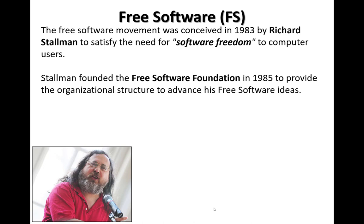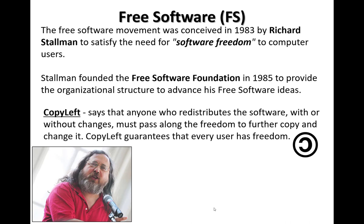I'm going to start by introducing Richard Stallman. In 1983, he conceived the free software movement based around the idea of software freedom. Around the same time, he founded the Free Software Foundation to provide the organizational structure to advance his free software ideas. At the core of this is the concept of copyleft, which says that anyone who redistributes the software, with or without changes, must pass along the freedom to further copy and change it. Copyleft essentially guarantees that every user has freedom.